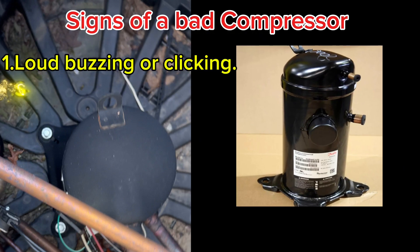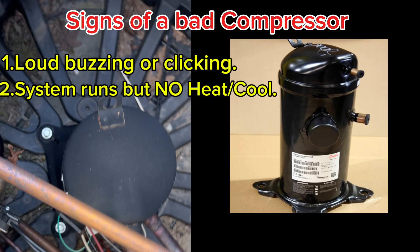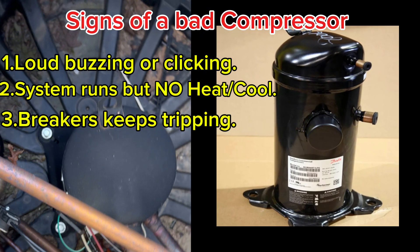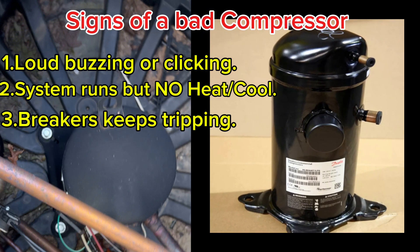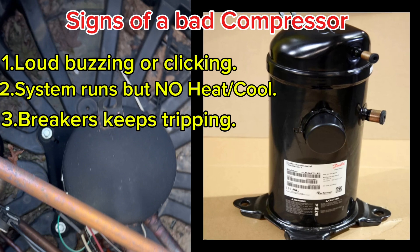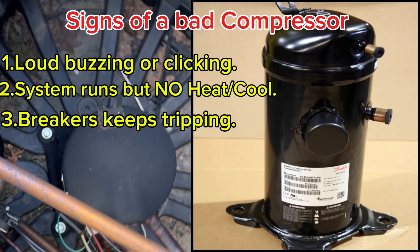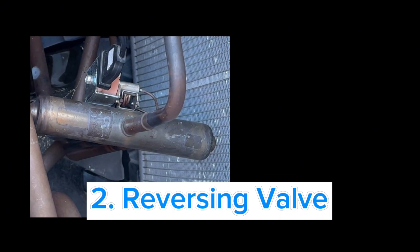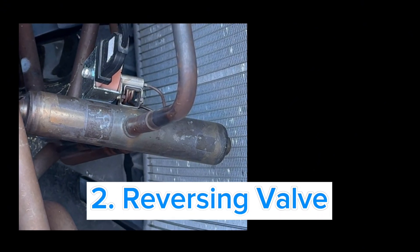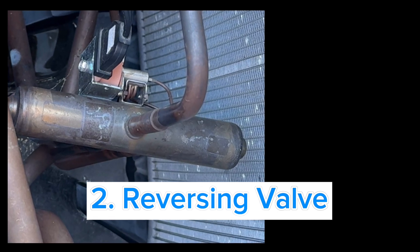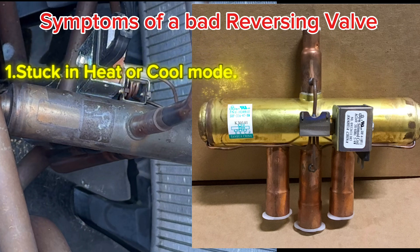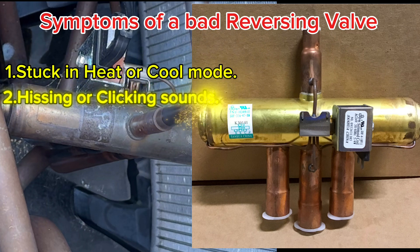First up is the compressor. This is the heart of your heat pump. It squeezes the refrigerant, or compresses it, raising its temperature so it can transfer the heat. No compressor, no heating or cooling. Number two is the reversing valve. This little device is the brains behind your heat pump's magic trick and lets your system switch between heating and cooling. If it goes bad, your heat pump can get stuck in one mode or, worse, stop working altogether.